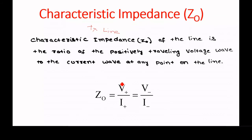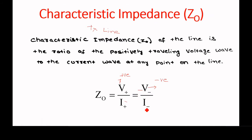V plus corresponds to positive travelling wave and V minus corresponds to negative Z direction or backward wave. Characteristic impedance is defined as the ratio of V plus by I plus, or it is given by minus of V minus by I minus.